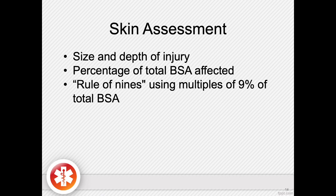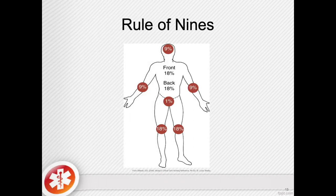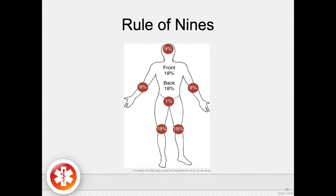The skin assessment shows the size and depth of the injury. When looking at size, we look at the percentage of total body surface area affected. We use the rule of nines, using multiples of 9% to determine the total body surface area affected by the burn. There are many different tools to determine the rule of nines — as long as you are consistent within your facility, there is no overall guidance as to which tool you use. Simply determine how much of the patient has been burned and apply it to the tool.